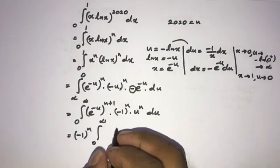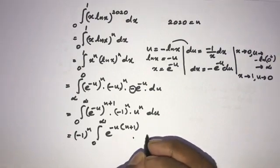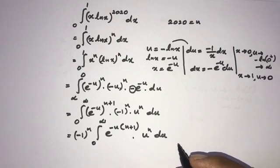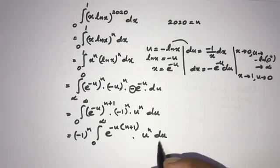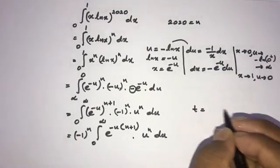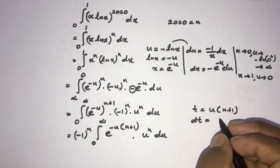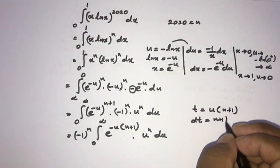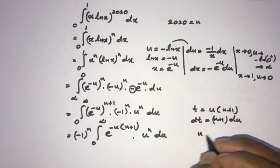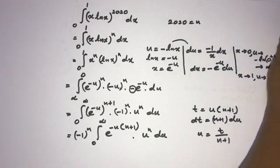Now we have minus 1 to the nth power times the integral from 0 to infinity of e to the minus u to the n+1 power times u to the nth power du. We use substitution again: let t equal u times n plus 1. Differentiating, dt equals n plus 1 times du, and u equals t over n plus 1.